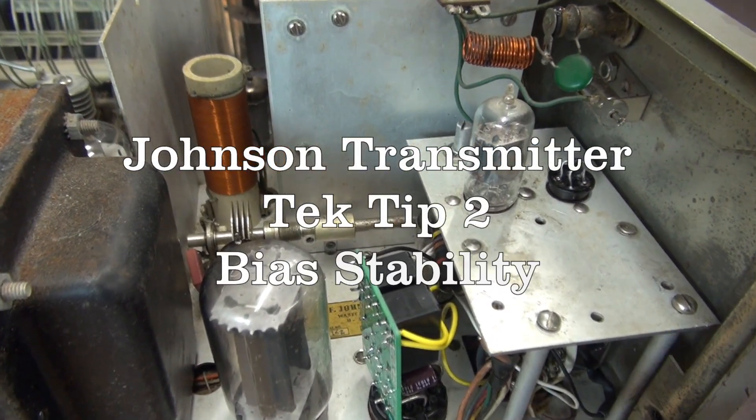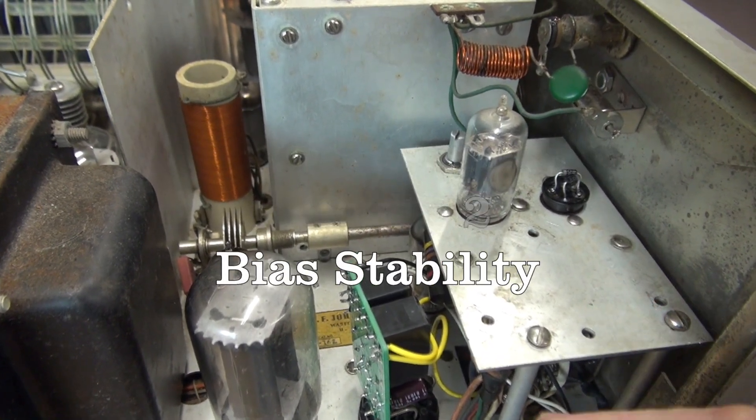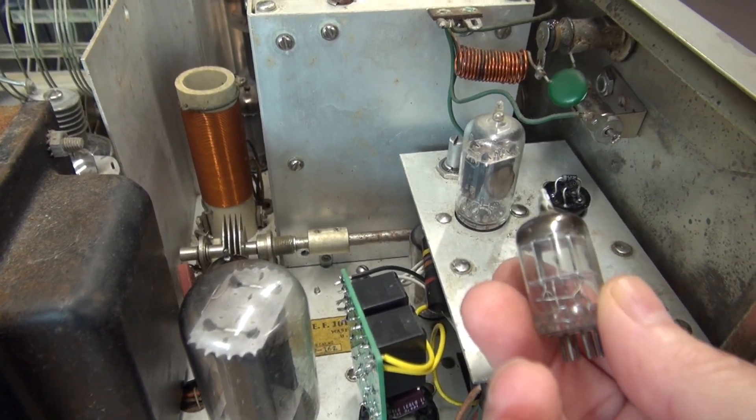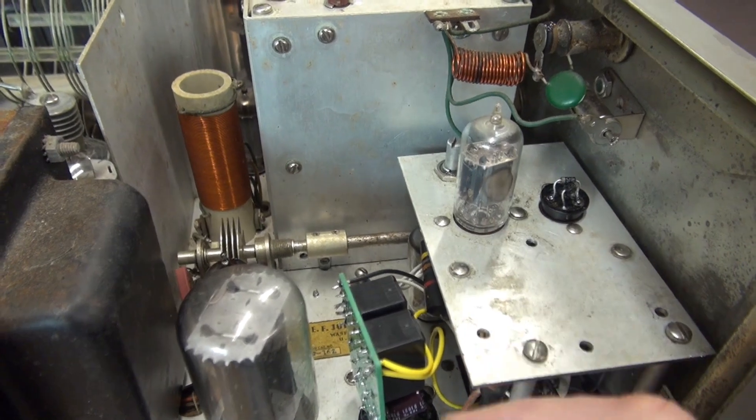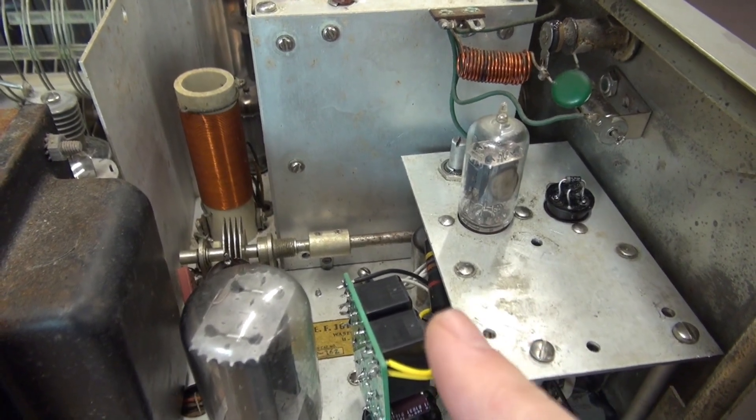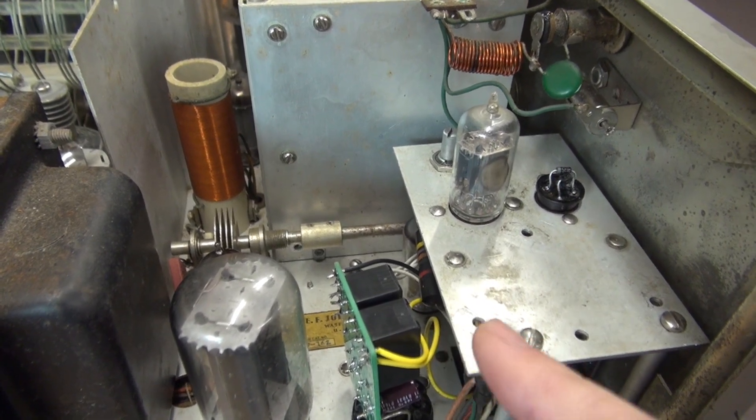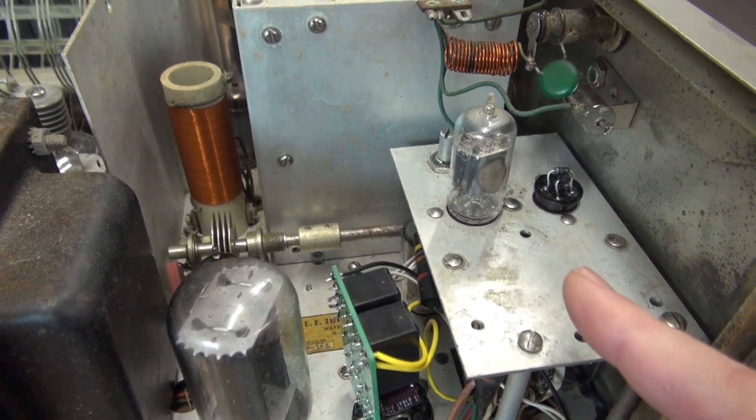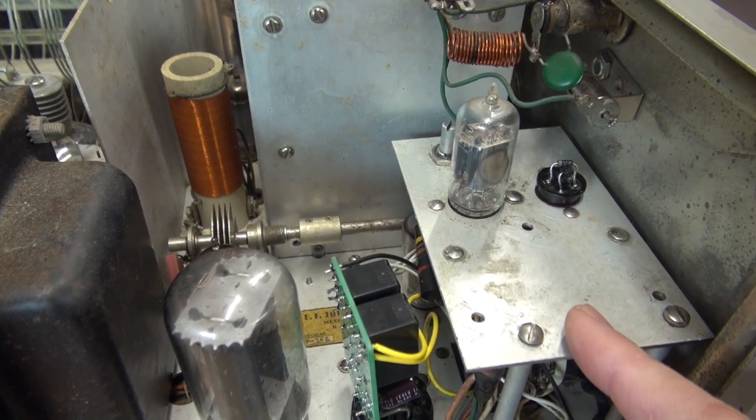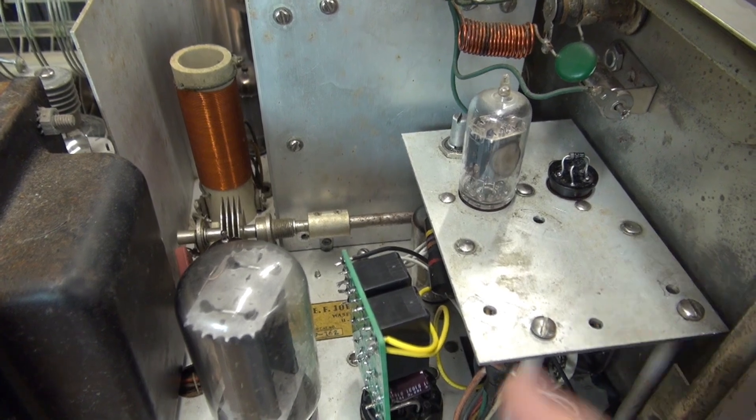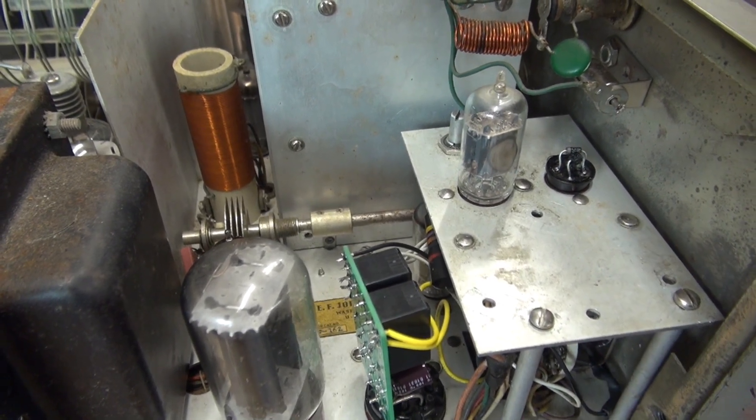All right, here is another tech tip for the Johnson Ranger and other transmitters that run the 6AL5 bias rectifier tube. If you're noticing modulation current drift, you're having to readjust the 20K resistor under the chassis to bring the modulation idle current back into tolerance, that is an indication that your negative bias is shifting. There's two sources of that shift.